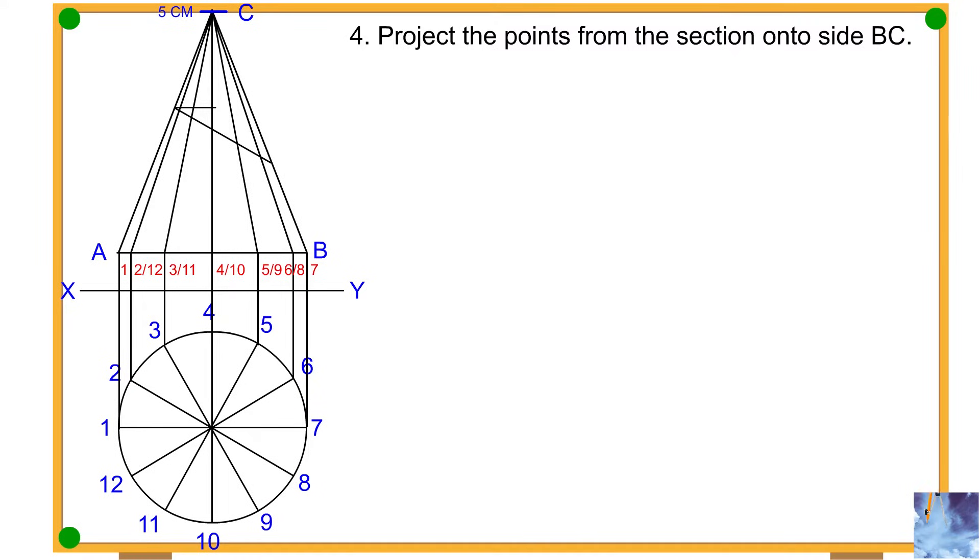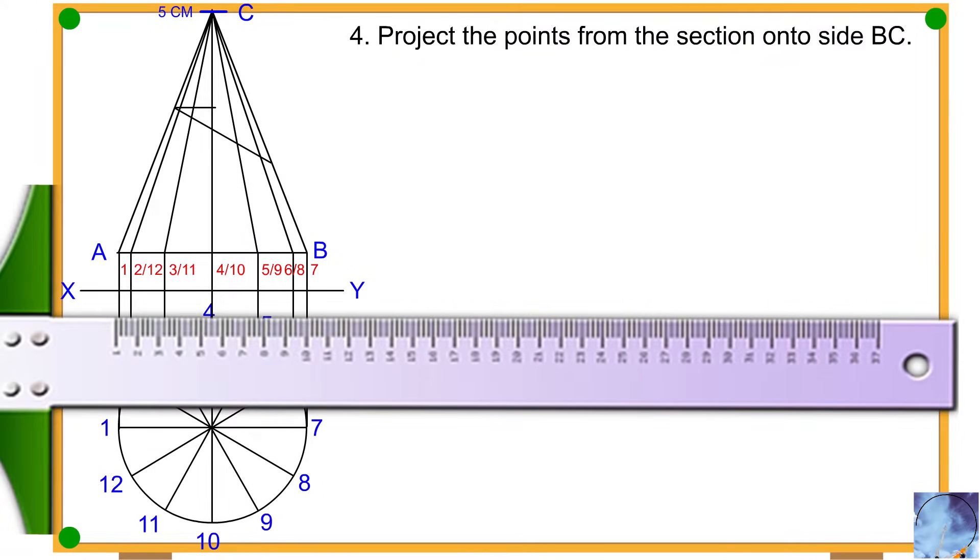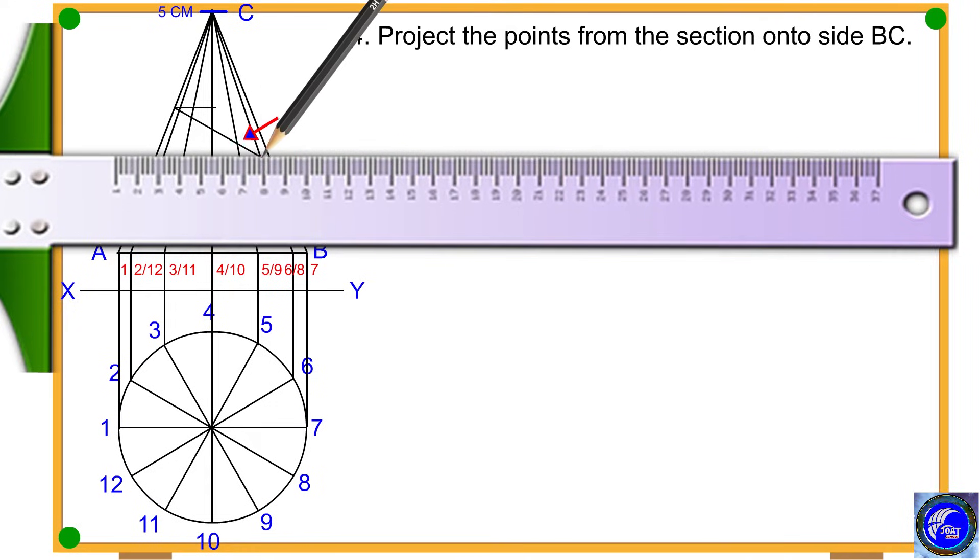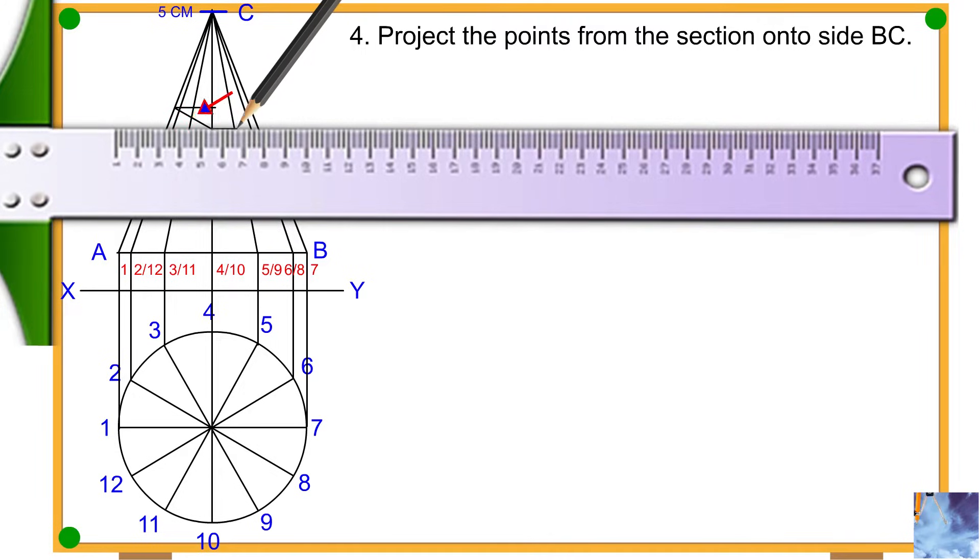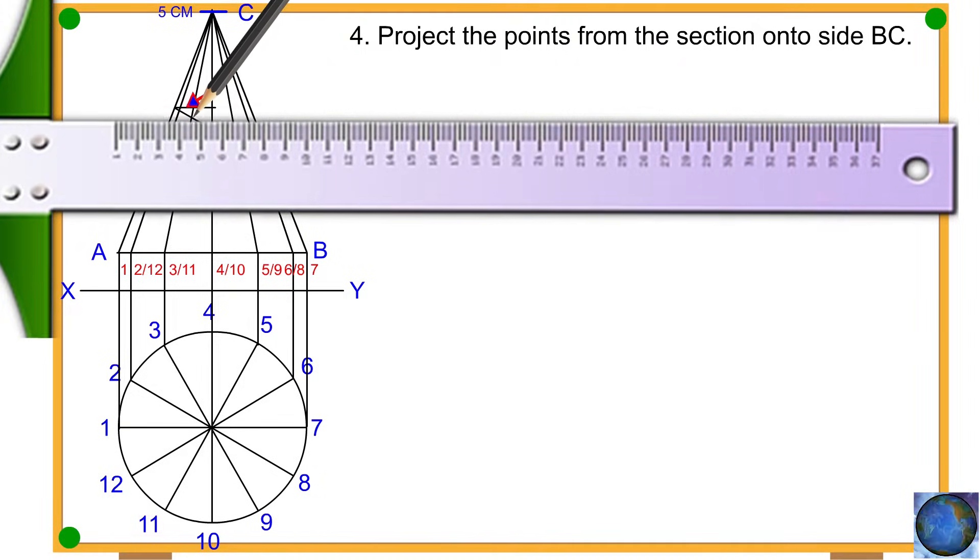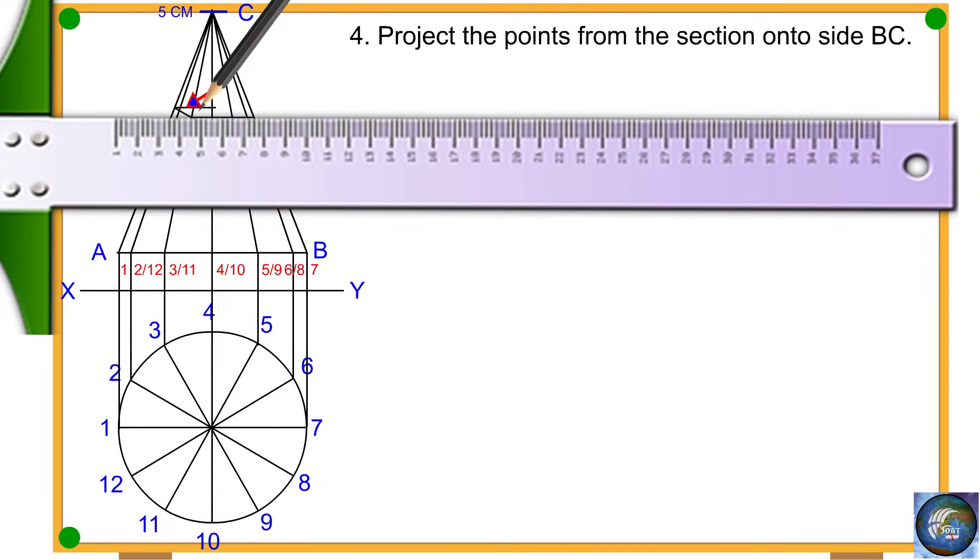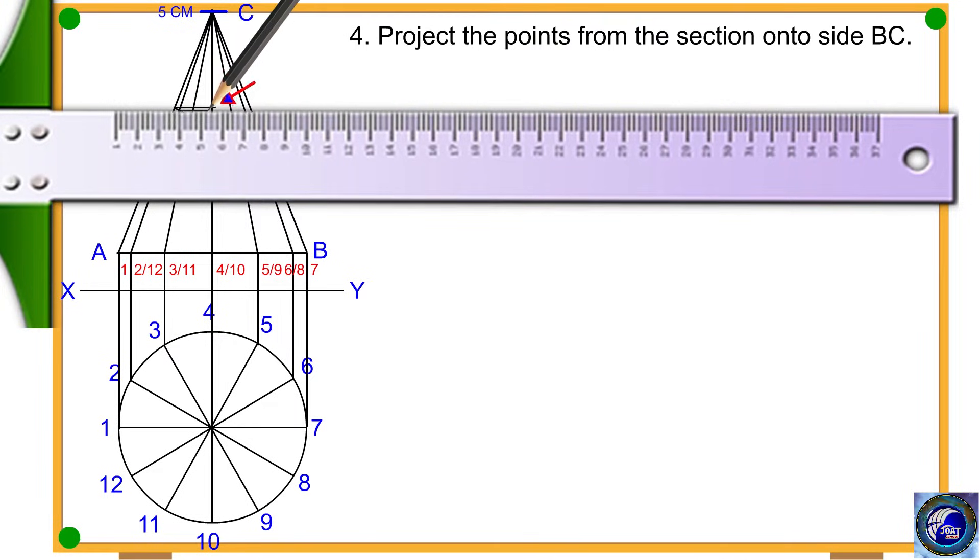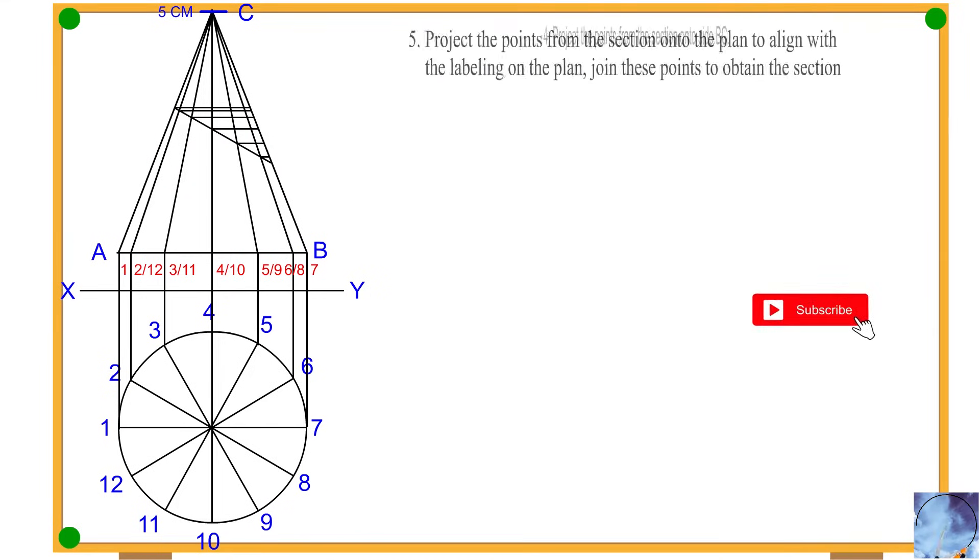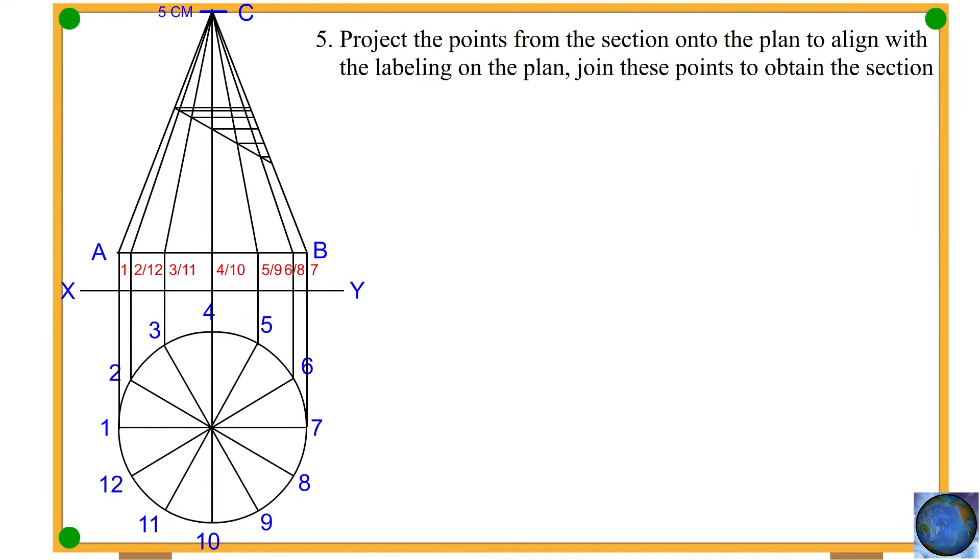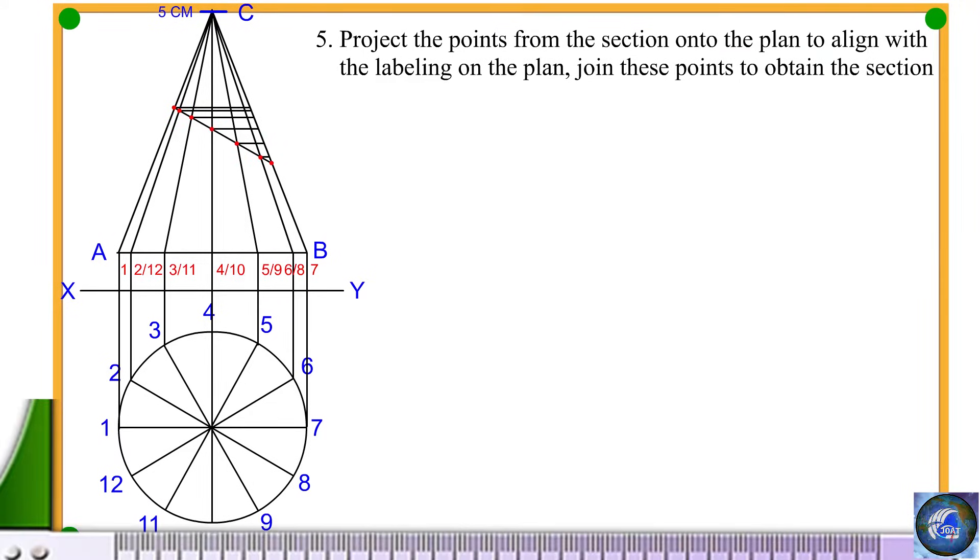Procedure 4: Project the points for the section onto side BC. Procedure 5: Project the points for the section onto the plan to align with the labeling on the plan. Join these points to obtain the section.